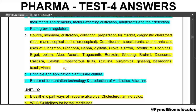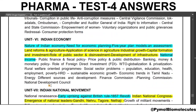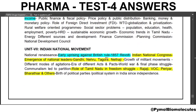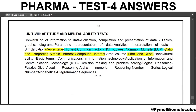That's all. Thank you for watching. In this test, we covered from cinnamon to ginseng in pharmacy. In the next test, we will cover brahmi to Vinca. For general studies, the next syllabus will be the Indian National Movement, Indian National Congress, and Emergence of National Leaders — Gandhi, Nehru, Tagore, and Netaji. For aptitude, the next topic will be ratio and proportion.